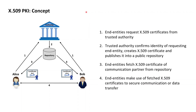The end entities in an X509 PKI, which we consider to be, for example, Alice and Bob, in a first step each request an X509 certificate from the PKI to obtain a certification for a cryptographic public key. The PKI, upon receiving this request, validates and confirms the identity of the requesting end entity, and if the identity is successfully confirmed, the PKI creates the X509 certificate and makes it publicly available by, for example, publishing the certificate into a public repository of certificates.